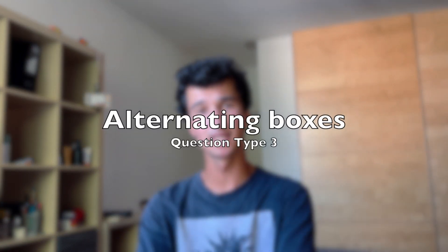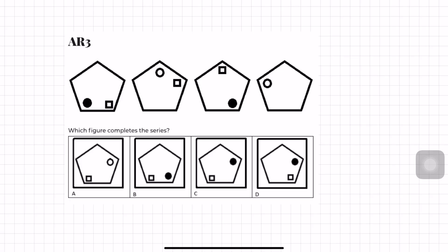Moving on to question type 3: this is a series of shapes that changes from one box to the next, and you need to identify the final box of the pattern. Looking at this AR3 example, we have four pentagons each with generally two shapes inside. The circle starts in corner 1 as black, moves to corner 3 as white, then corner 5 as black, then corner 2 as white — so it moves two spots each time and alternates between black and white. This means the next circle will be black and in a specific position, cancelling out A and B. The square is always unfilled and moves from position 5 to 4 to 3 — so next it goes to position 2, confirming C is correct.